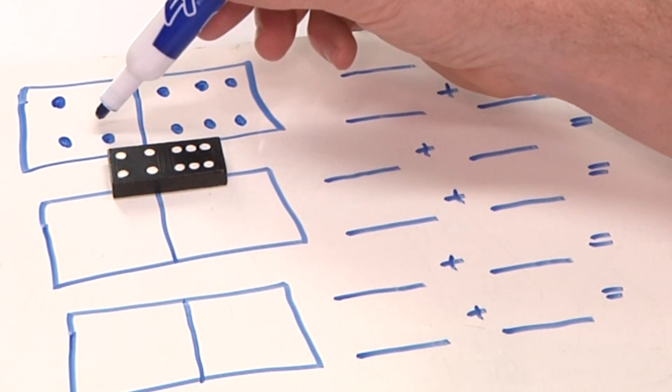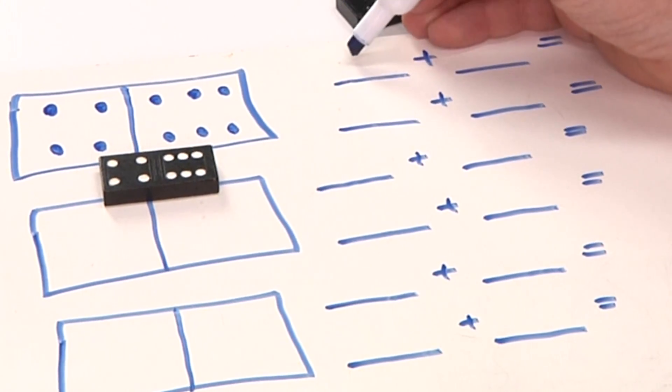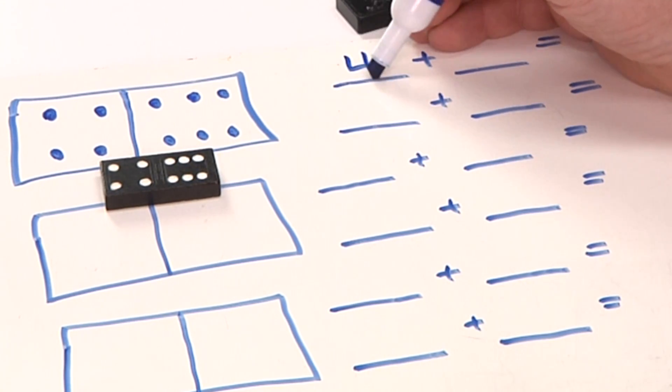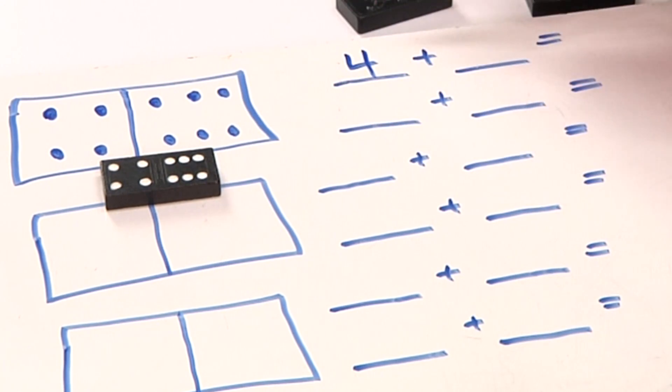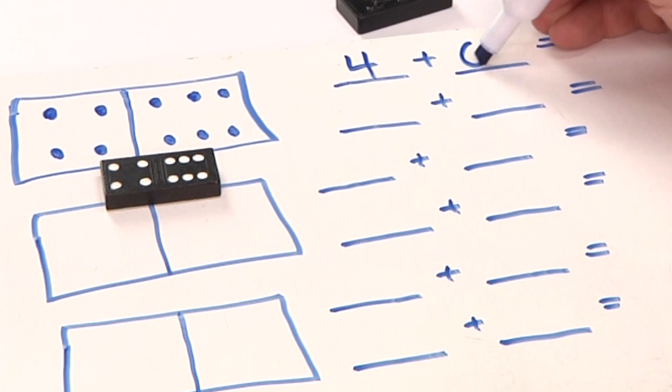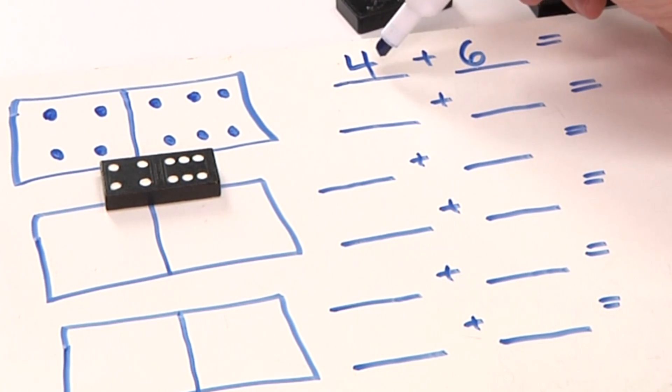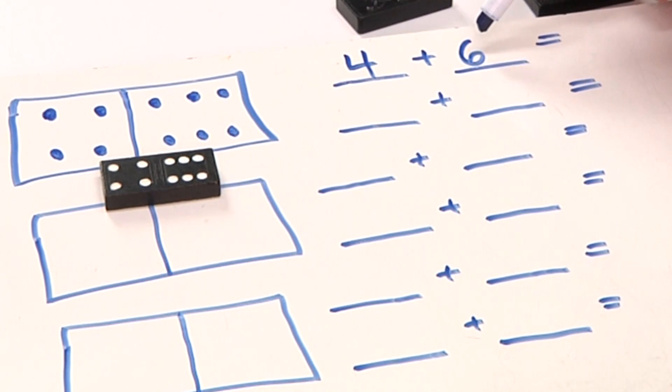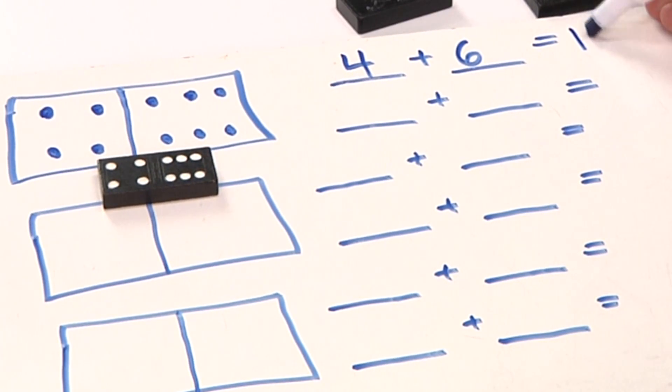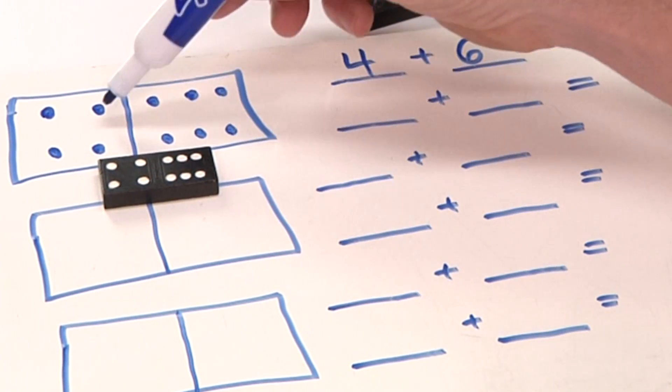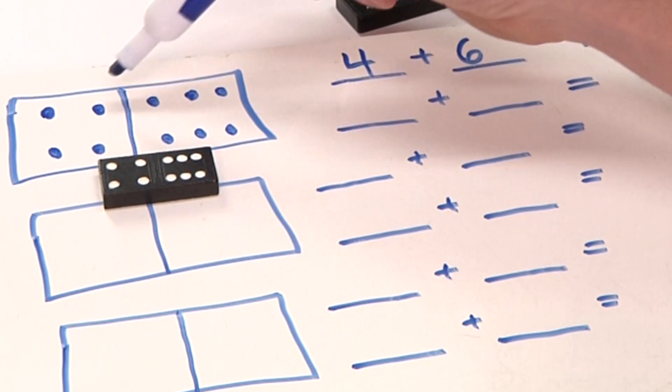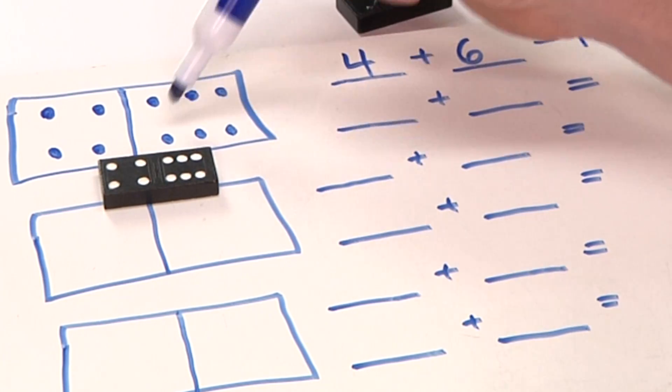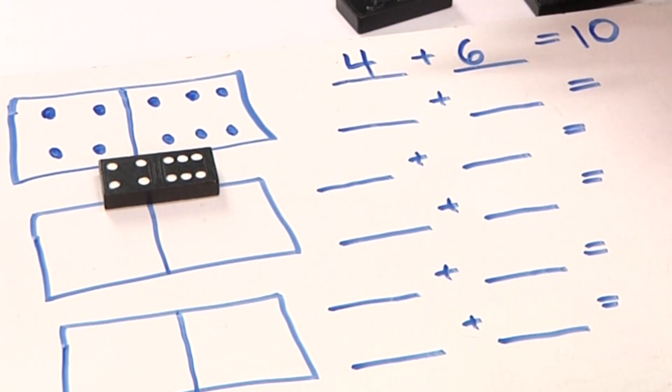I'm going to take this number, which is 4, and put that right here, and take this number, which is 6 dots, and put that here. These numbers are called the addends. So 4 plus 6 equals 10. You can count: 4, 5, 6, 7, 8, 9, 10.